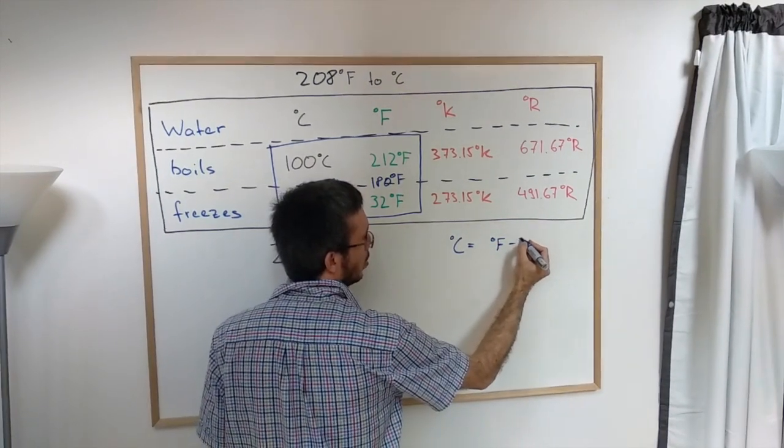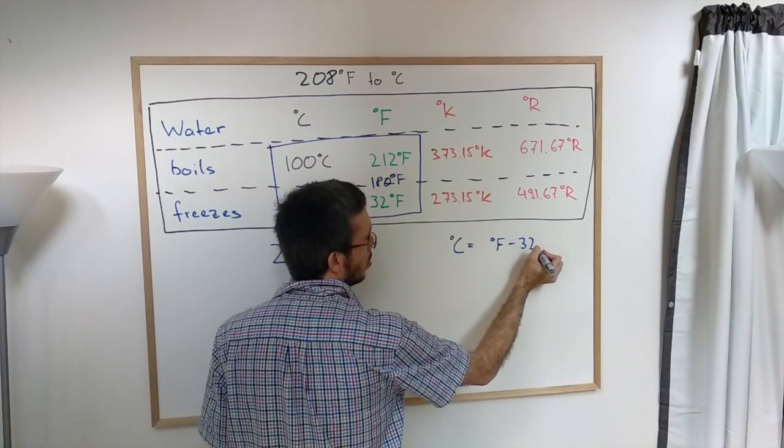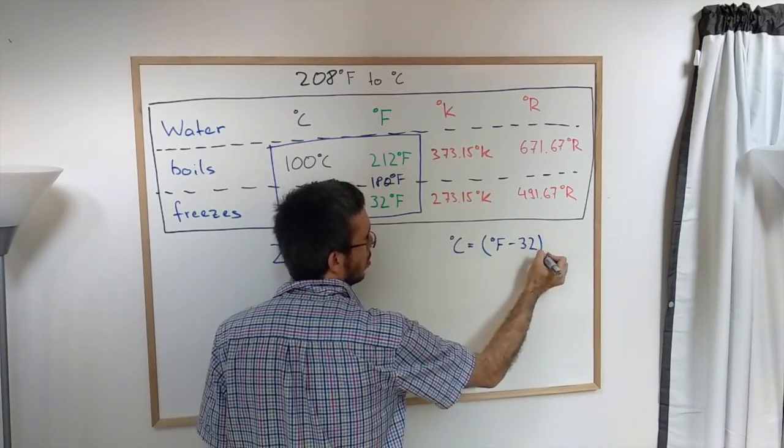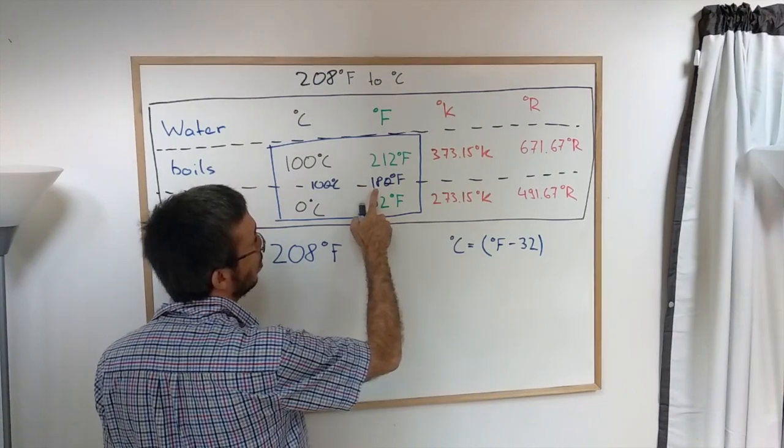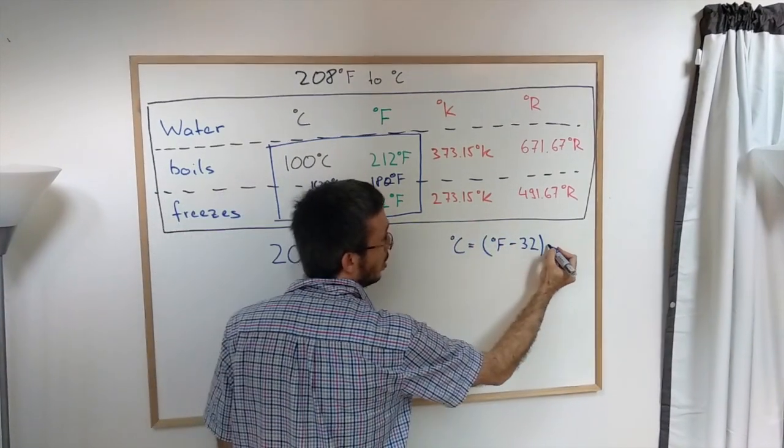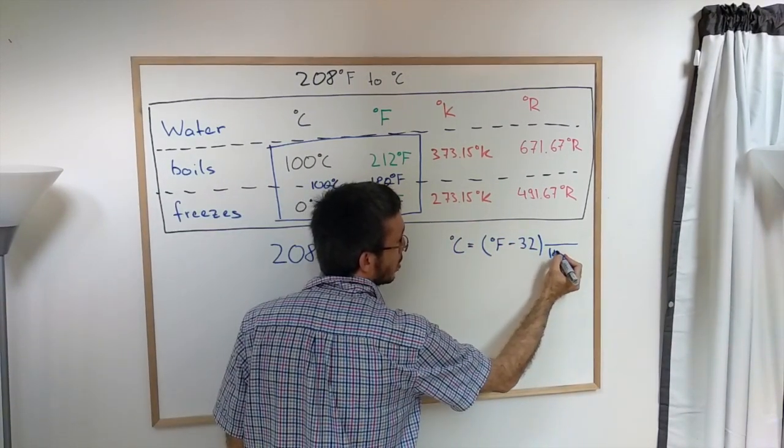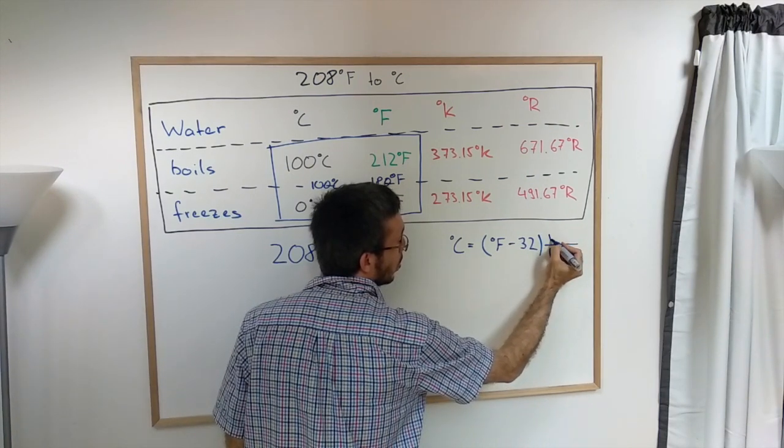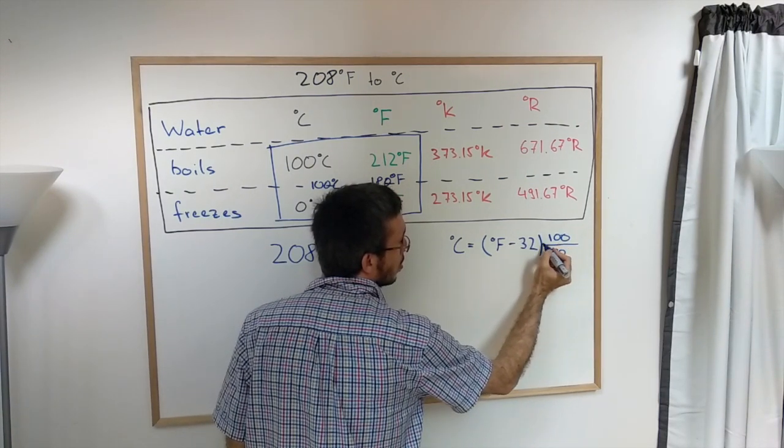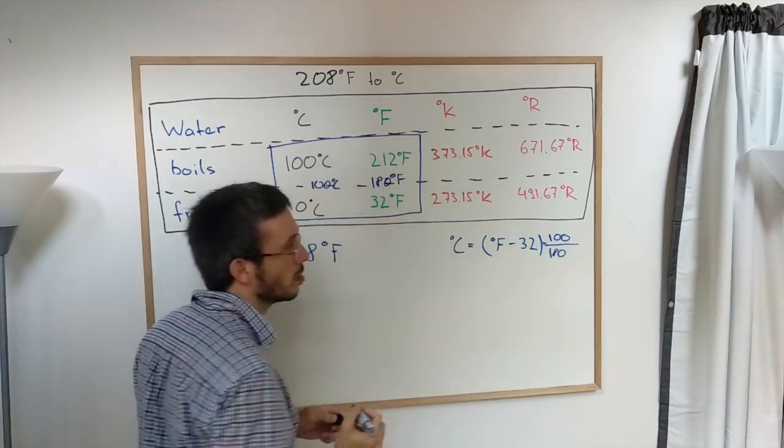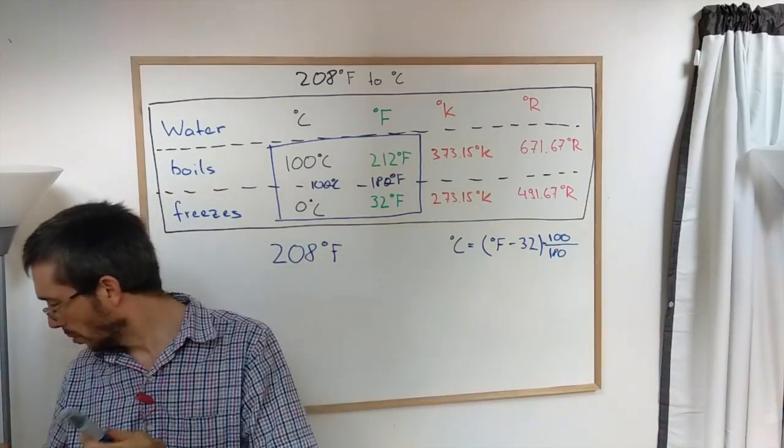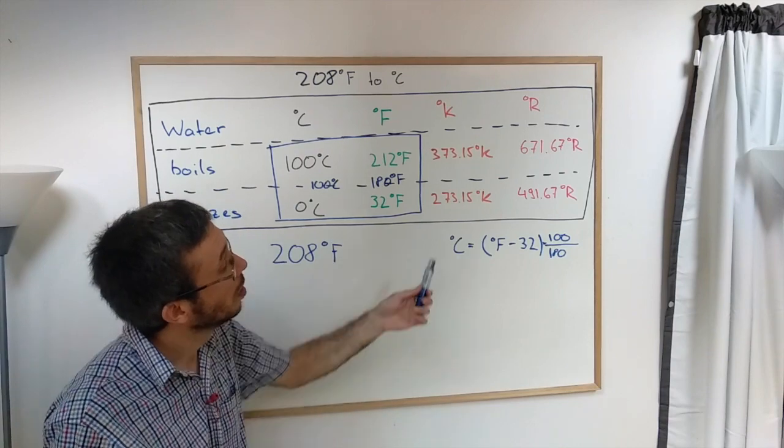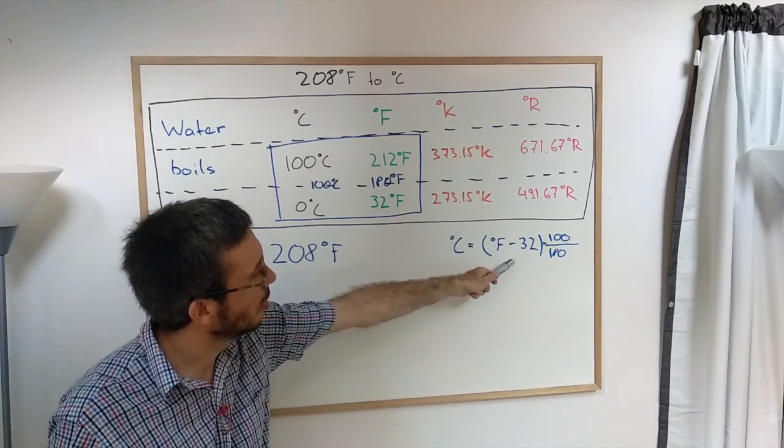Then we make it equal to 180 Fahrenheit and we multiply by 100 to get into Celsius. And this, if you look it up, is exactly the formula for converting from Fahrenheit into Celsius.